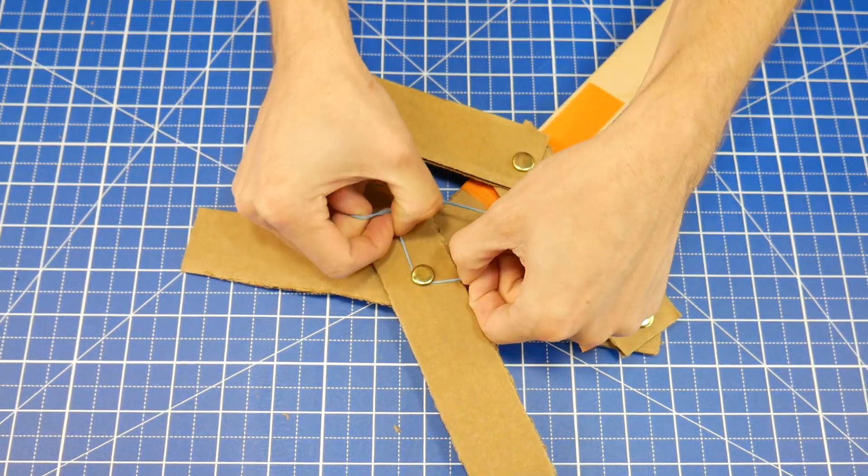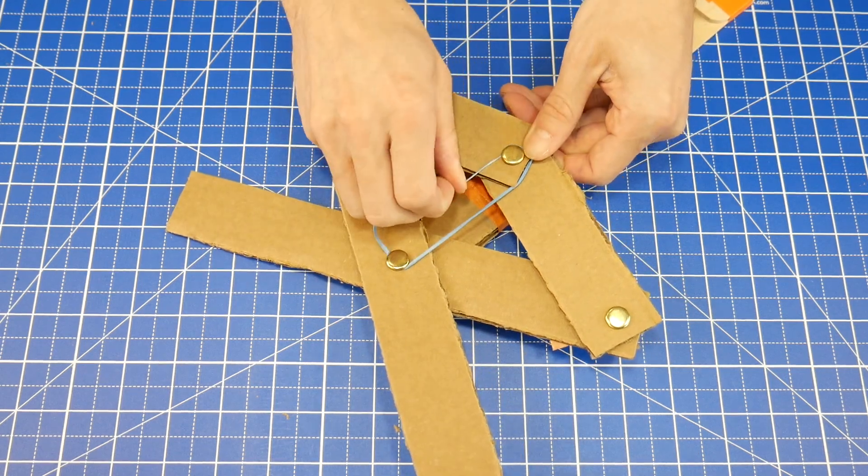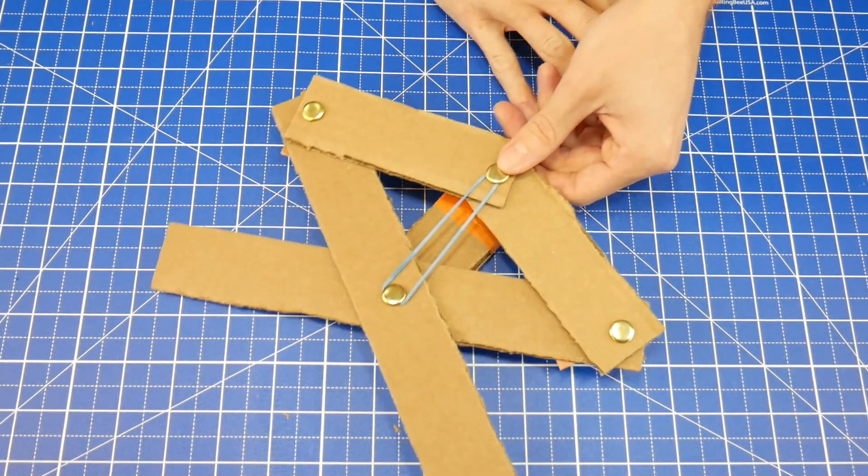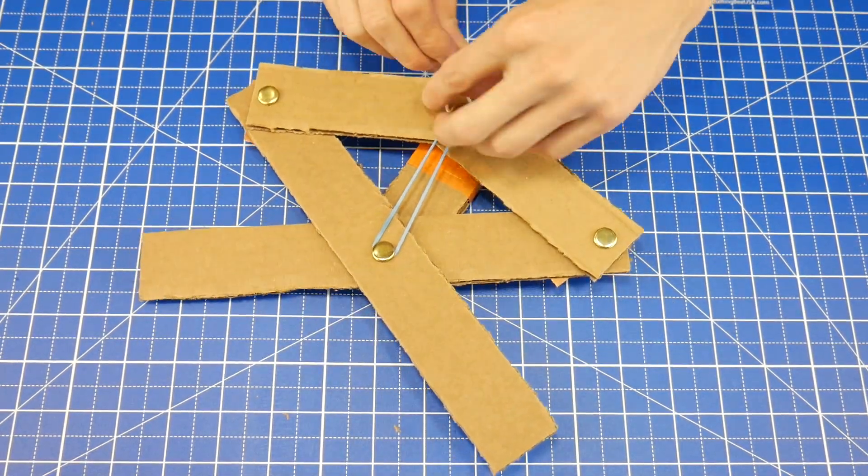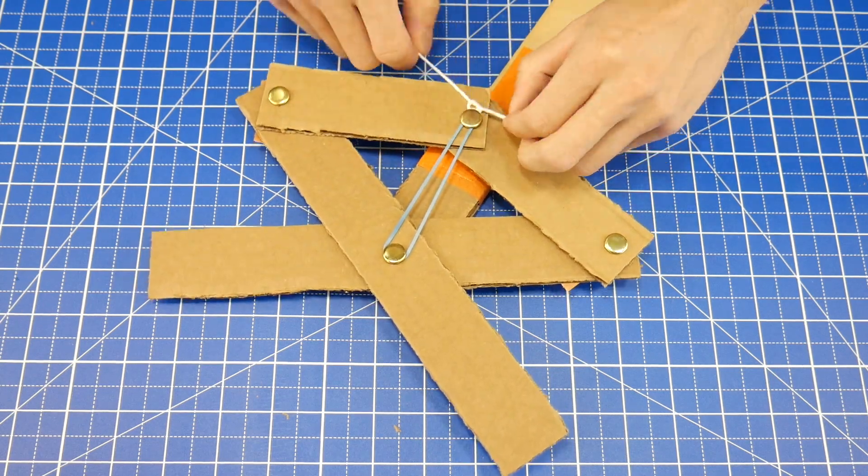To make the grabber open up automatically, attach a rubber band underneath the heads of these two fasteners. And finally, tie a string under the head of this fastener.